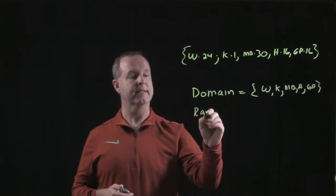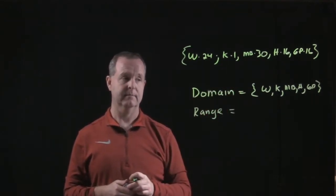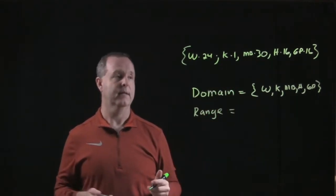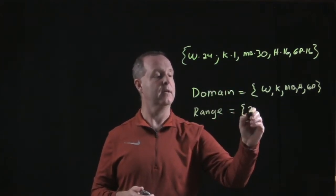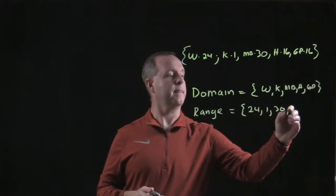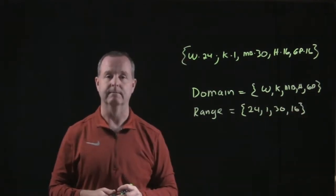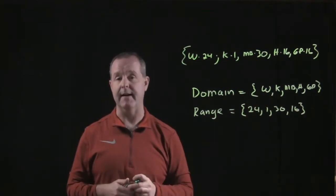But the second element in each of those relationships, we call the range. And so if I add all those up together, I look for every element that's unique: 24, 1, 30, and 16. Notice I didn't need to put 16 twice since it was already existing in that element.